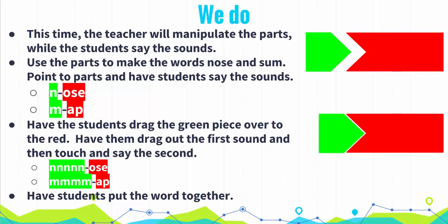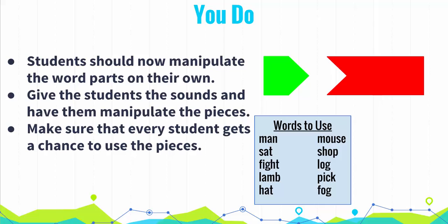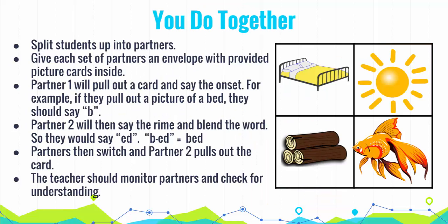Remember to have a word list handy so that you can easily provide students with sounds. In the independent section, students should do all parts on their own while the teacher observes and intervenes if necessary. The student should both manipulate the pieces and say the sounds. If it becomes apparent that students are not capable of doing this on their own, it may be necessary to model again. The last section is a partner activity that allows students to practice blending and can also be adapted for segmenting. The cards for this activity are located in the lesson plan and resource section of Edify. Make sure to model this activity thoroughly before releasing students to practice independently.